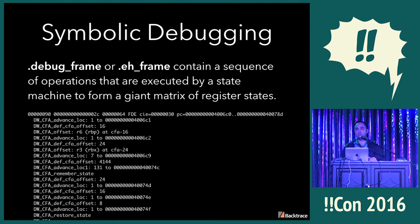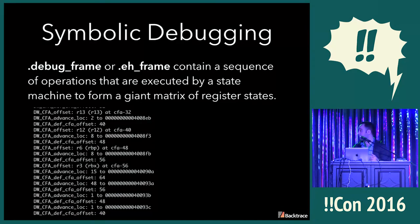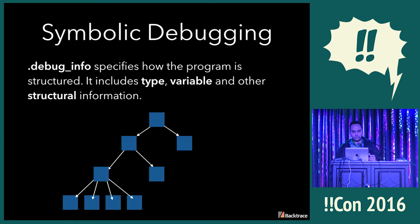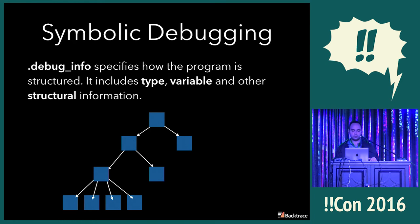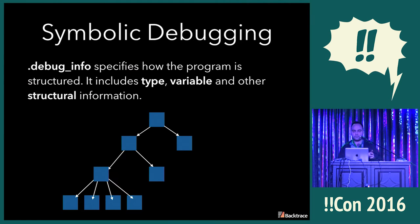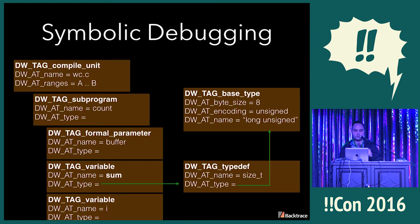debug_frame is very similar to debug_line — you execute a massive state machine and that expands into a matrix. And then debug_info, which is very important, essentially gives you all the details about how your program is structured: type information, variable information, functions, even things like lexical scope. All kinds of crazy stuff. That's represented as a tree, and every one of those boxes is referred to as a DIE — debug information entity.